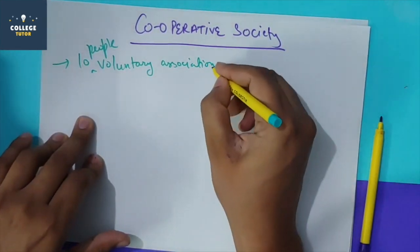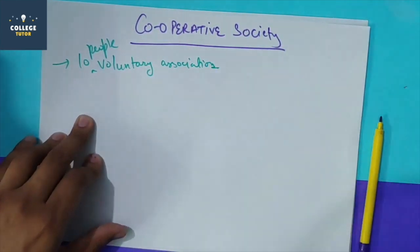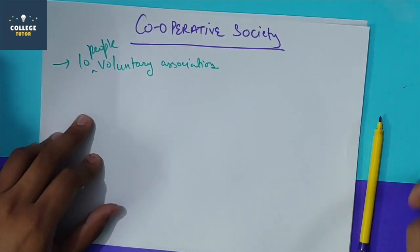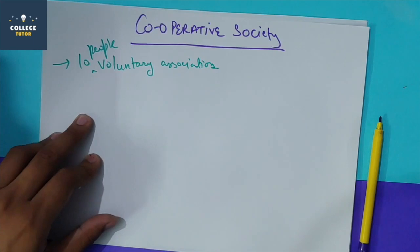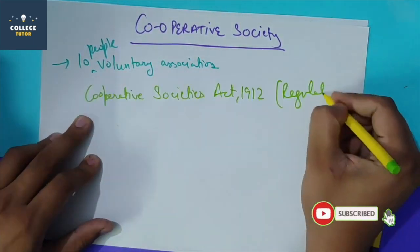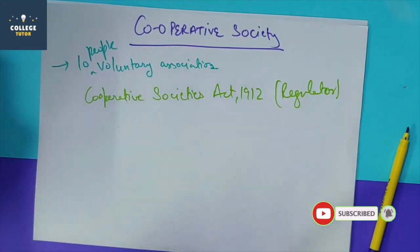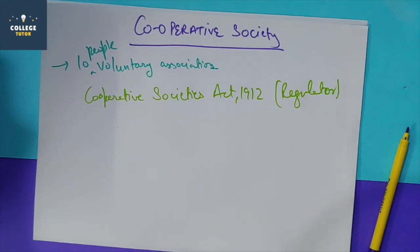The minimum requirement for a cooperative society is 10 members. It is regulated under the Cooperative Societies Act 1912. Besides that, state-related policies and cooperative society laws, which may differ from state to state, also regulate and operate these societies.